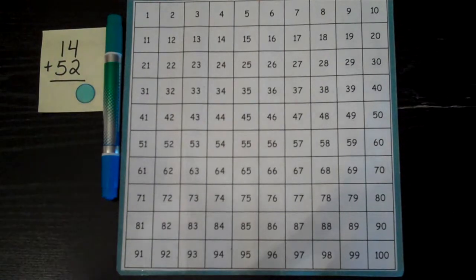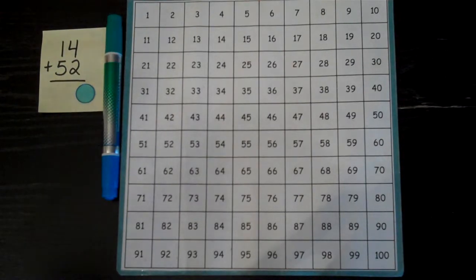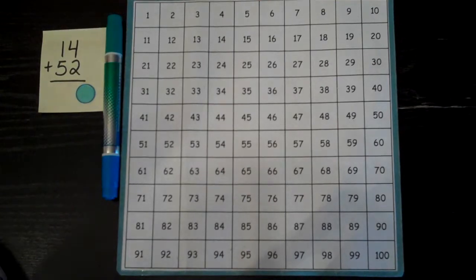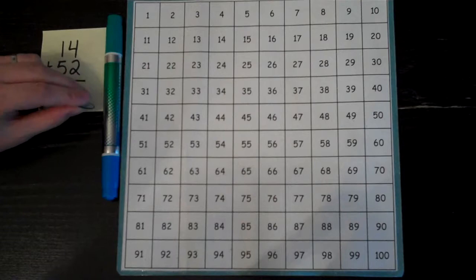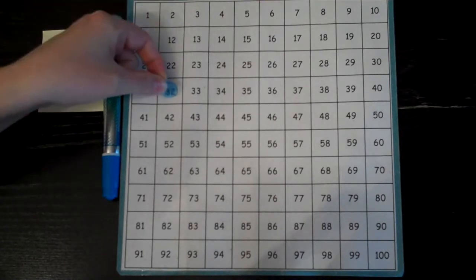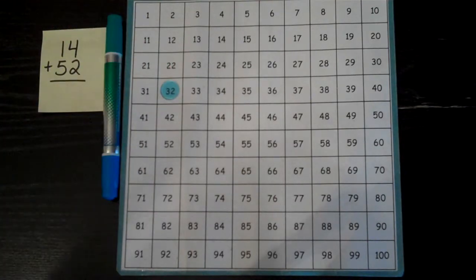In this video I will go over how to use a hundreds chart for adding bigger numbers. First you'll need to get a hundreds chart. These are fairly easy to print off the internet. You also will need to get a marker or chip of some kind. I like to use one that's see-through so that I can see what I'm working with, but a penny or nickel work just as well.